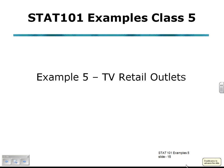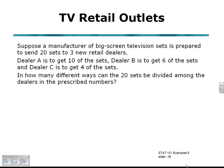Example 5 in Stat101, Examples Class 5: TV Retail Outlets. Suppose a manufacturer of big screen TV sets is prepared to send 20 sets to 3 new retail dealers. Dealer A is to get 10 of the sets, dealer B is to get 6, and dealer C is to get 4. In how many ways can the 20 sets be divided among the dealers in these prescribed numbers?